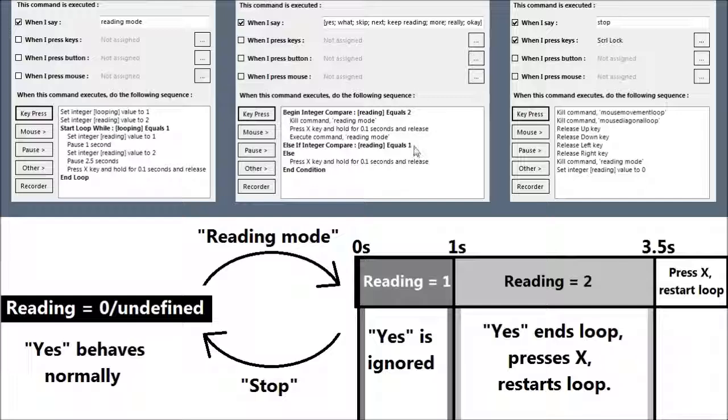If it's not equal to 2, it checks if it's equal to 1, which is in the first second of the loop. If that's the case, it executes no code at all. The yes is ignored. Now, if neither of these are the case, it means you're not in the loop anymore, you're in normal behaviour. It says else, press X. So the yes command only behaves normally when the reading loop is inactive. When I've done enough reading, I say stop, which kills the loop and sets the value reading to 0.